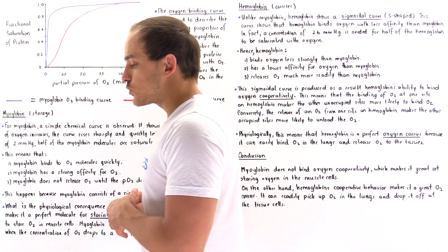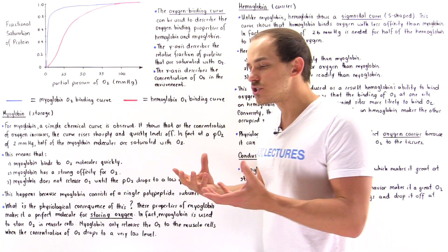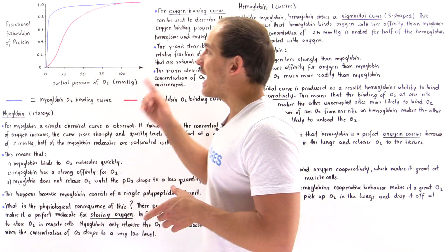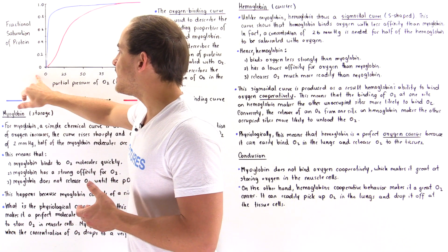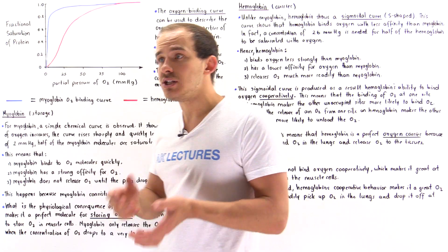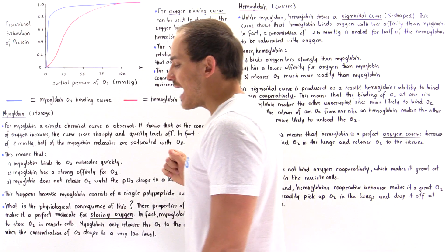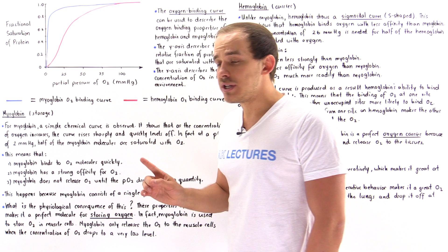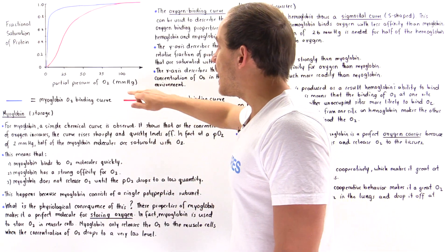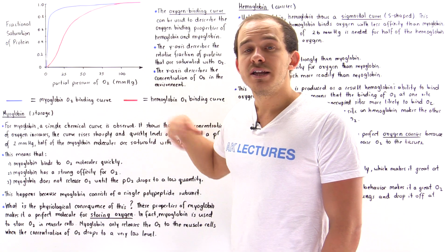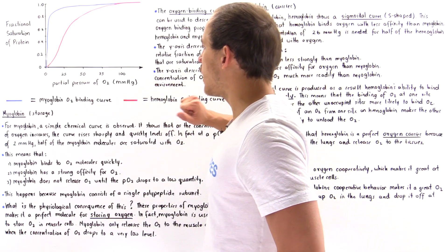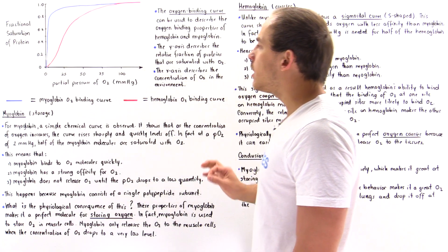On the graph, the y-axis describes the fractional saturation of the protein — it tells us what fraction of the total number of proteins in our mixture is fully saturated and bound to oxygen. It ranges from 0 to 1, where 0 means none of the proteins contain oxygen, while 1 means 100% of the proteins are bound to oxygen. The x-axis describes the concentration of oxygen, and because oxygen is a gas, we use the partial pressure of oxygen, PO2, given in millimeters of mercury or torr. On this graph, we begin at 0 mmHg and end at 100 mmHg.